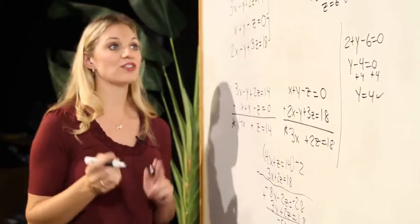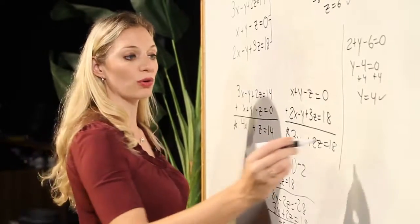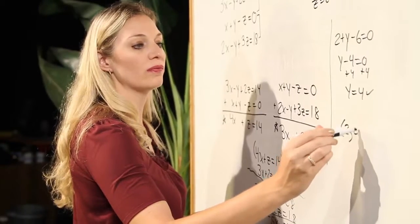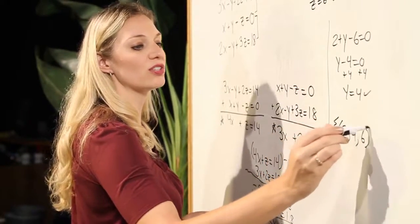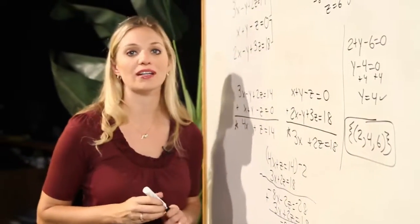I now have my x, y, and z values. We want to write this as an ordered triple. My solution is the point (2, 4, 6). Since this is my solution set, I will put these set symbols around that final answer.